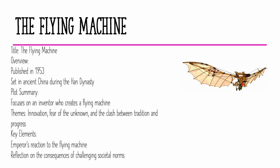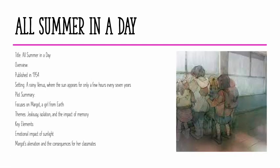The key elements of The Flying Machine are the emperor's reaction to the flying machine and the friction around the consequences of challenging societal norms.